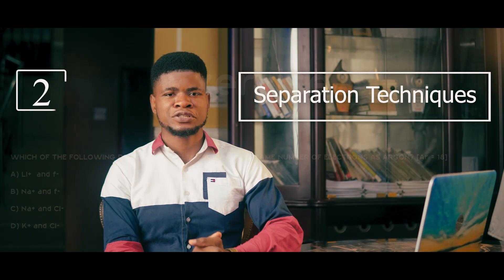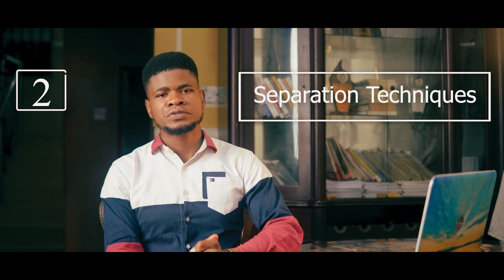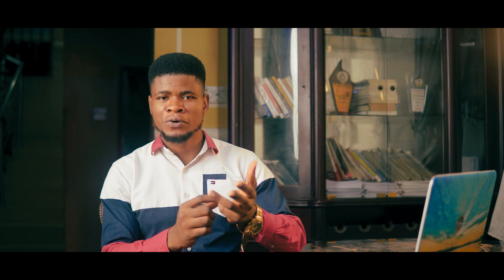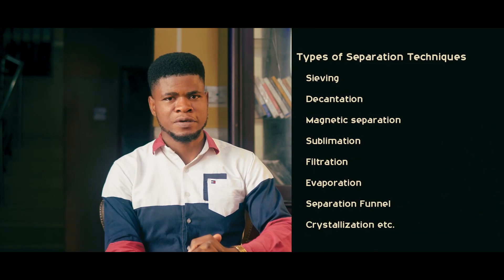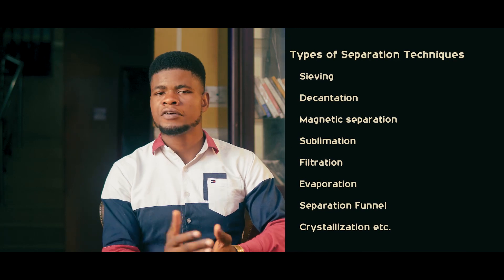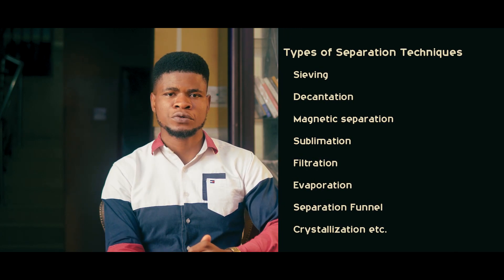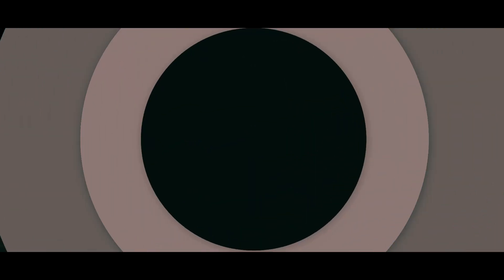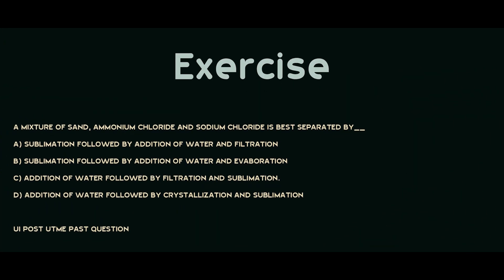The next topic is separation techniques. You should know the difference between mixtures and compounds, and the difference between pure and impure substances. You should know the types of separation techniques and their applications. For example, if you're given a mixture that contains ammonium chloride — we know ammonium chloride sublimes — so you should immediately look for the option with sublimation in it. By elimination, you can find your answer. Attempt the question on your screen and leave the answer in the comment section below.